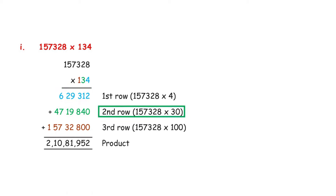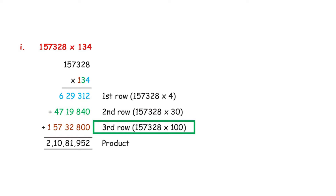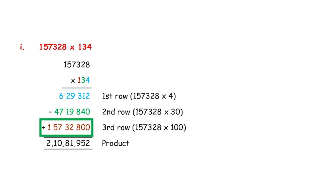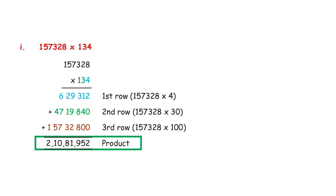The second row is 1,57,328 × 30, because 3 is in the tens place. That gives 47,19,840. The third row is 1,57,328 × 100, because 1 is in the hundreds place, giving 1,57,32,800. Add all three rows together, and the product is 2,10,81,952. So 134 bikes would cost 2,10,81,952 rupees.